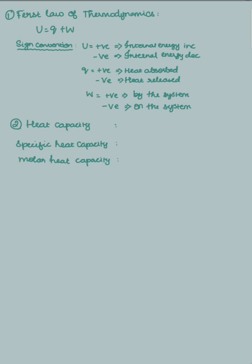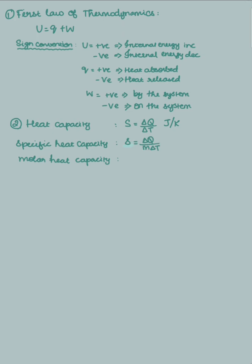Coming to the next point, we will see specific heat capacity, molar heat capacity, and heat capacity. Heat capacity is ΔQ by ΔT, and the unit for this will be Joule per Kelvin. Specific heat capacity is the amount of heat required to raise the temperature of 1 gram of a pure substance by 1 degree Kelvin. Its unit will be Joule per kg per Kelvin.